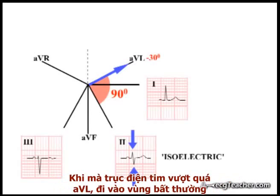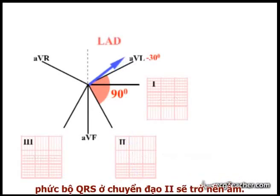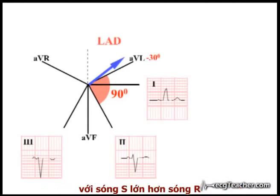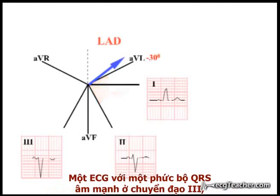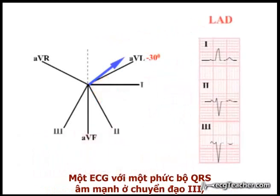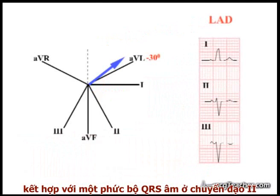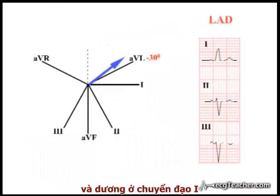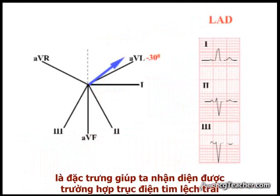Once the axis moves beyond AVL into abnormal territory, the QRS complex in lead 2 becomes overall negative, with an S wave larger than the R wave. This pattern of a strongly negative QRS complex in lead 3, combined with an overall negative QRS in lead 2 and a positive lead 1, is instantly recognizable as left axis deviation.